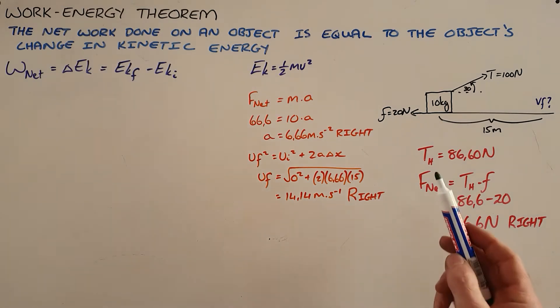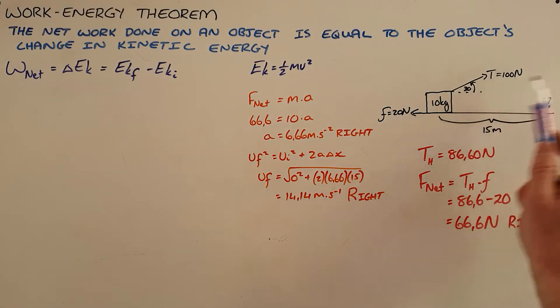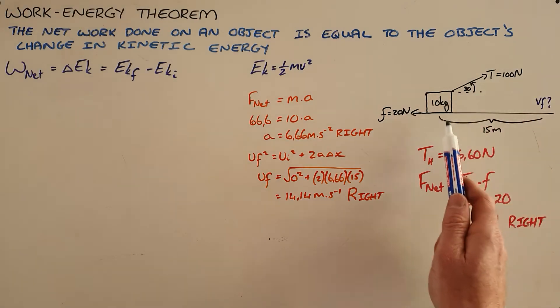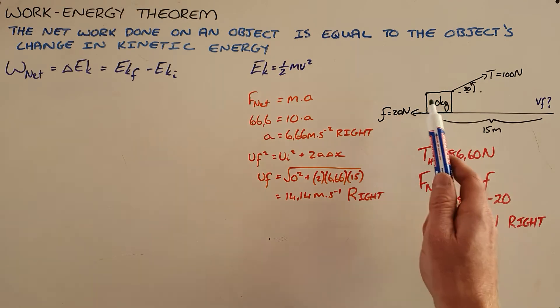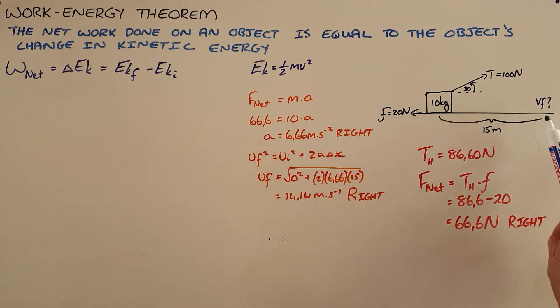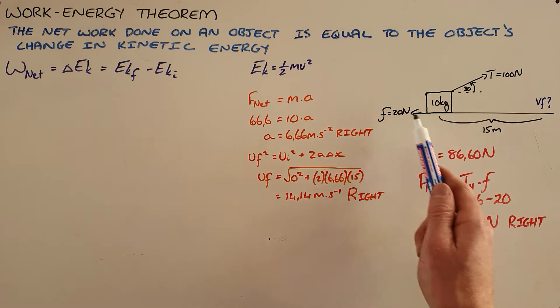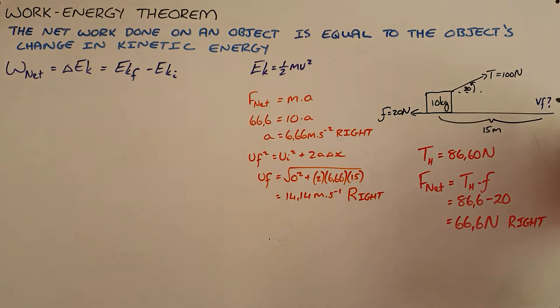So in an example that we have here, we have a tension force of 100 newtons applied at an angle of 30 degrees on a 10 kilogram object. The object moves 15 meters to the right and there's a frictional force of 20 newtons. And the question here would ask something along the lines of, calculate the final velocity or the velocity after 15 meters.